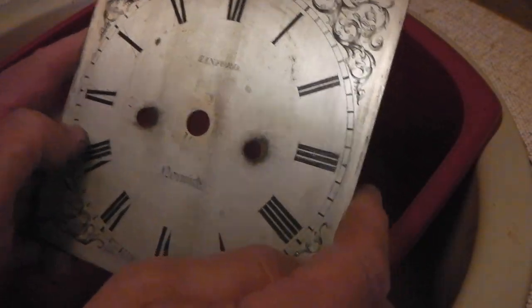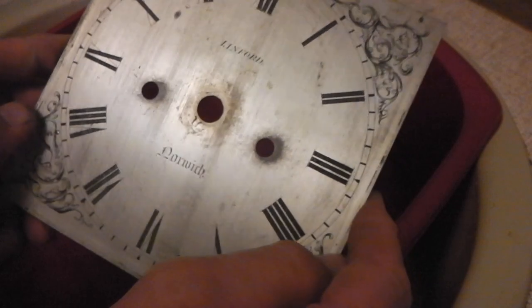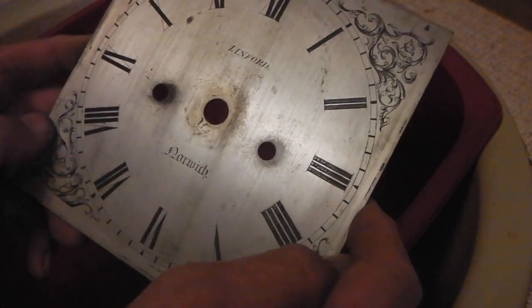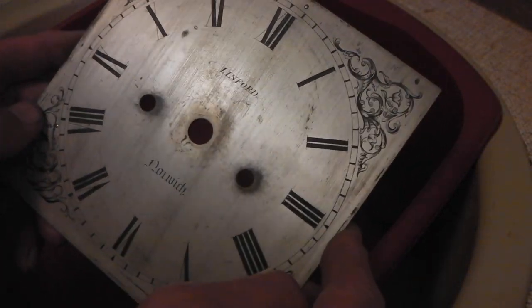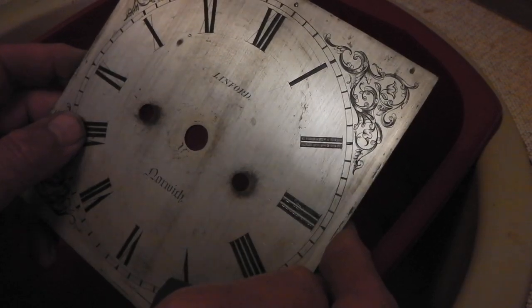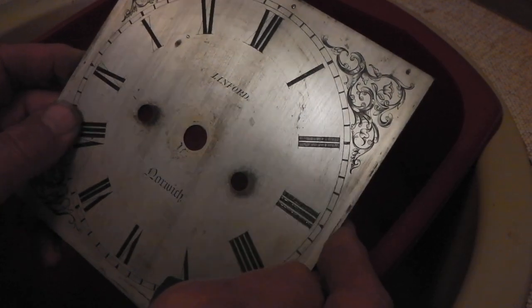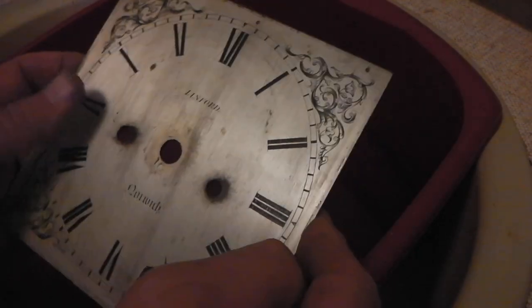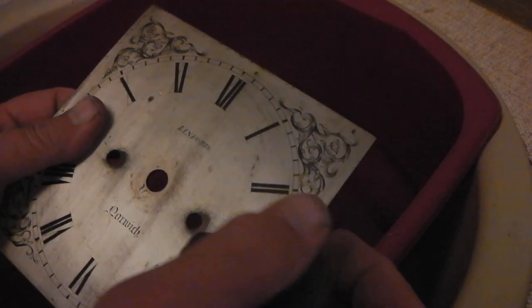This is a silvered brass dial from about 1840 with a slightly grained finish, but the silvering is very distressed, so this is the process of re-silvering.